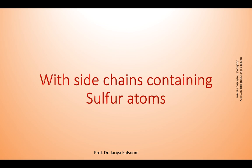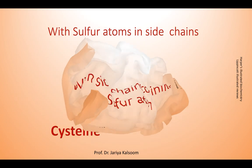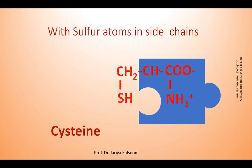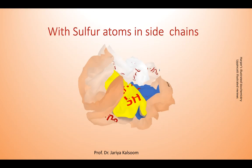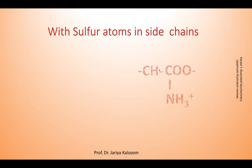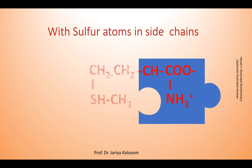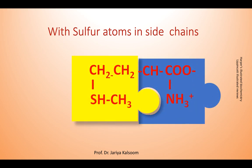Sulfur atoms may also be present in the side chains. For example, cysteine or methionine, as shown here.